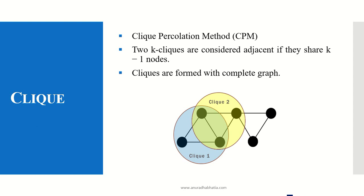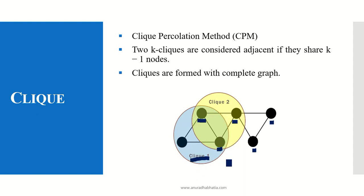If you see over here, my graph has 1, 2, 3, 4, 5 and 6 nodes, and these 6 nodes are connected to each other. A clique is formed when all 3 nodes are connected together. This clique 1 is formed when all 3 nodes are completely connected and they form a complete graph. The nodes which are not connected to each other do not form a clique.